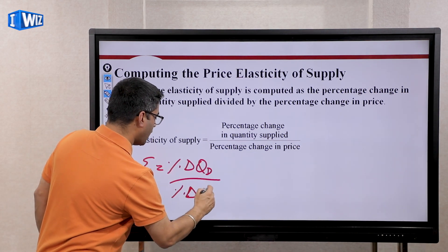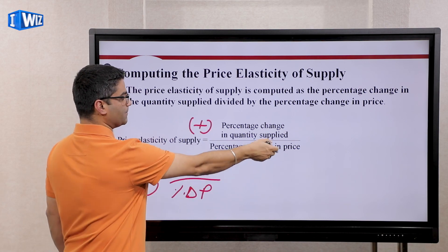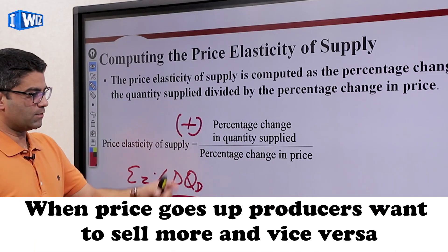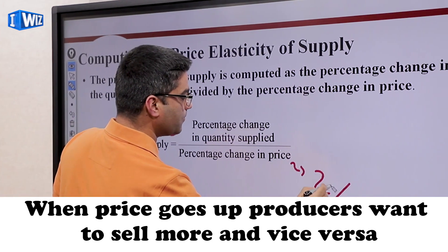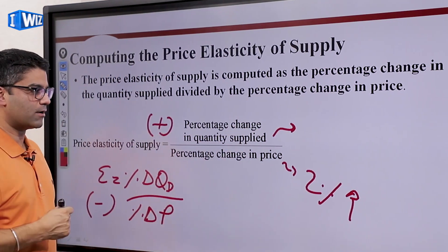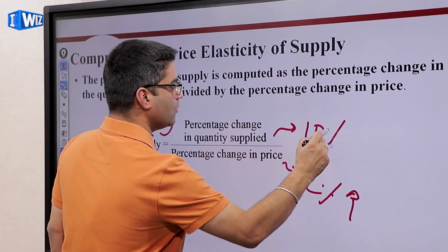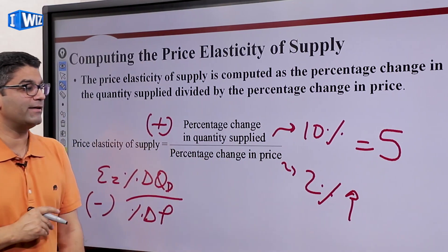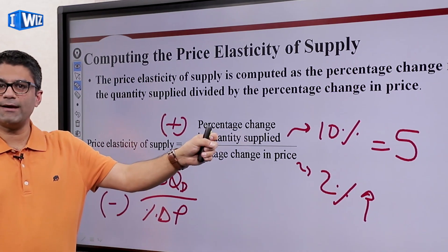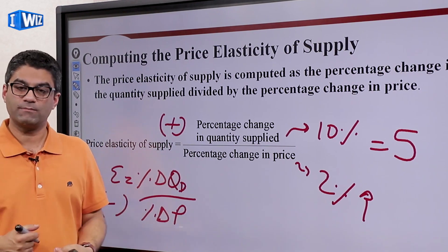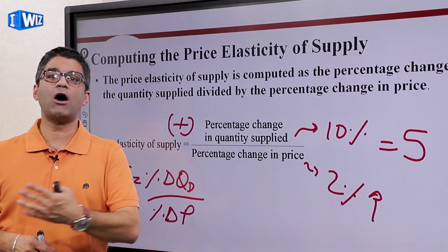Now we are looking at how producers change their behavior when price changes. This relationship was always negative for demand. We know this relationship is going to be positive, because when the price goes up, producers are going to want to produce more, and if the price goes down, they're going to want to produce less. For example, if the percent change in price is two percent and the percent change in quantity supplied goes up by ten percent, then the price elasticity of supply is five — meaning as the price goes up by one percent, quantity supplied goes up by five percent.